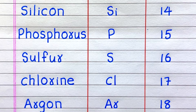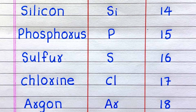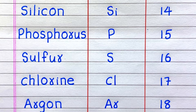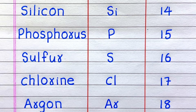The fourteenth element is Silicon, symbol Si, atomic number 14. Fifteenth, Phosphorus, P, 15. Sixteenth, Sulphur, S, 16. Seventeenth element, Chlorine, symbol Cl, atomic number 17. Eighteenth, Argon, Ar, 18.